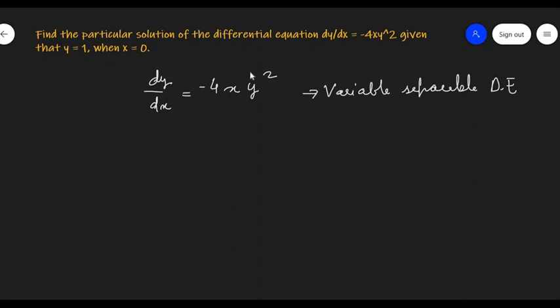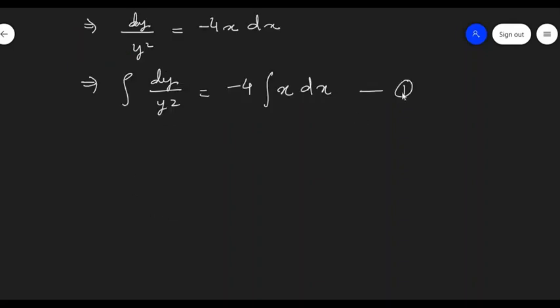We are going to bring y^2 to the left hand side and dx to the right hand side. So, I'm going to get dy/y^2 = -4x dx. Now that we have separated these terms, we can integrate to get the solution. Let's call this equation number one.